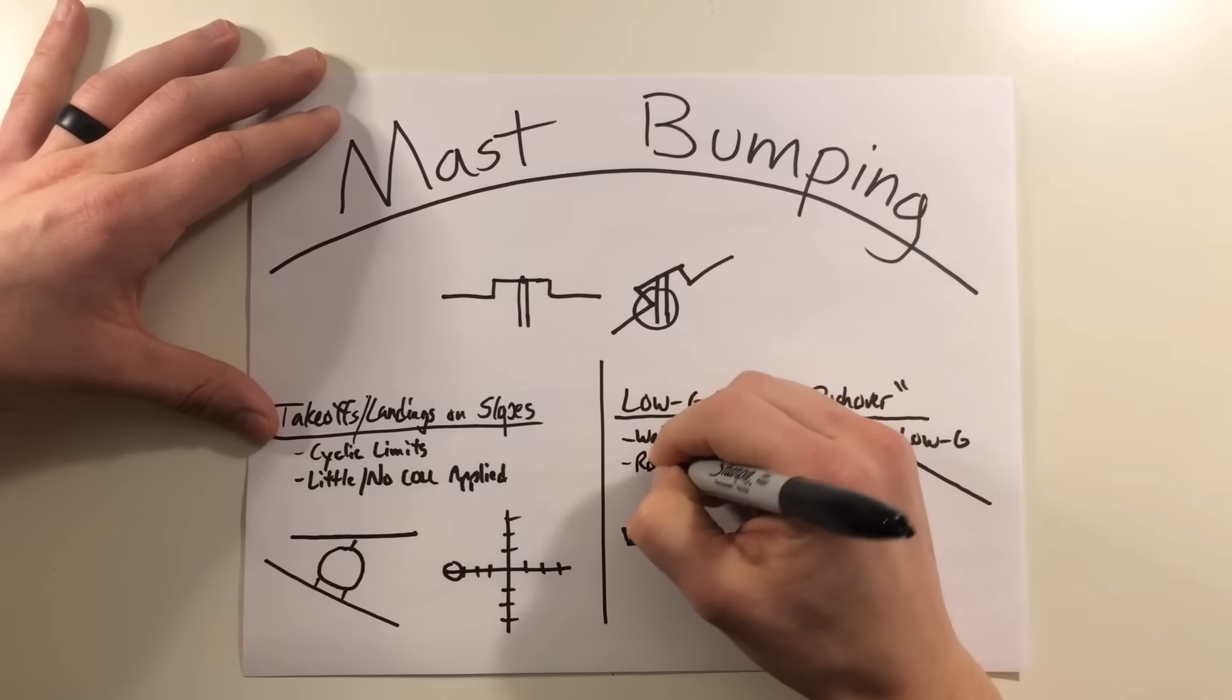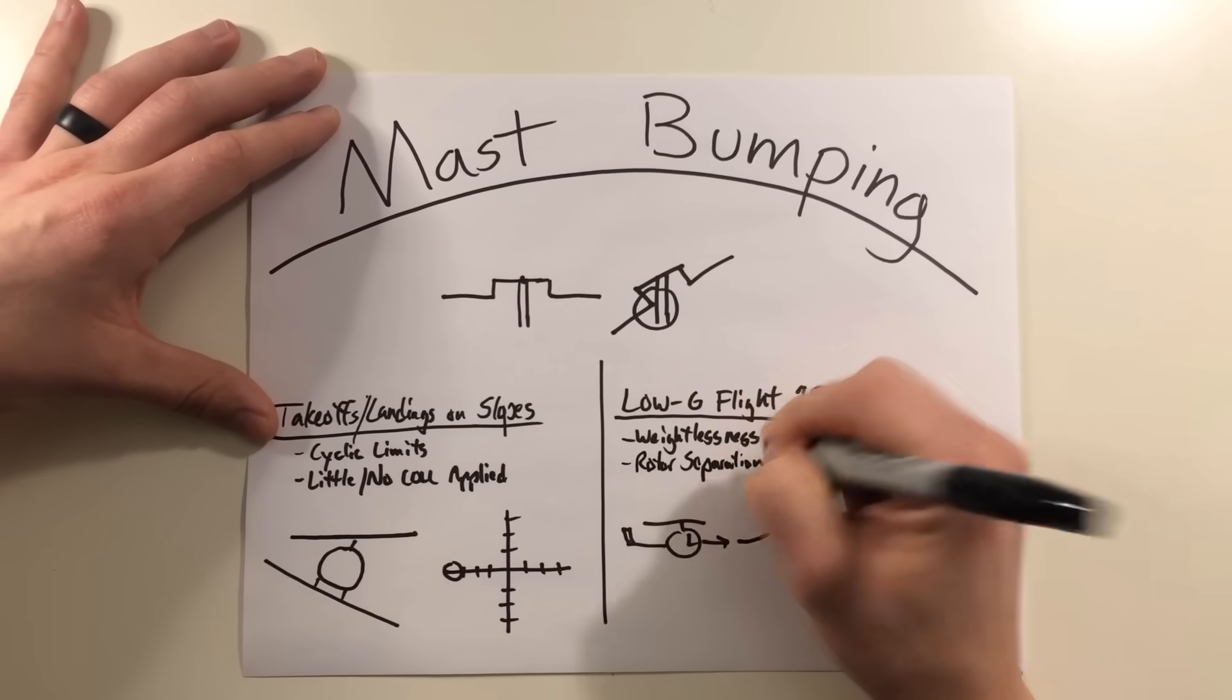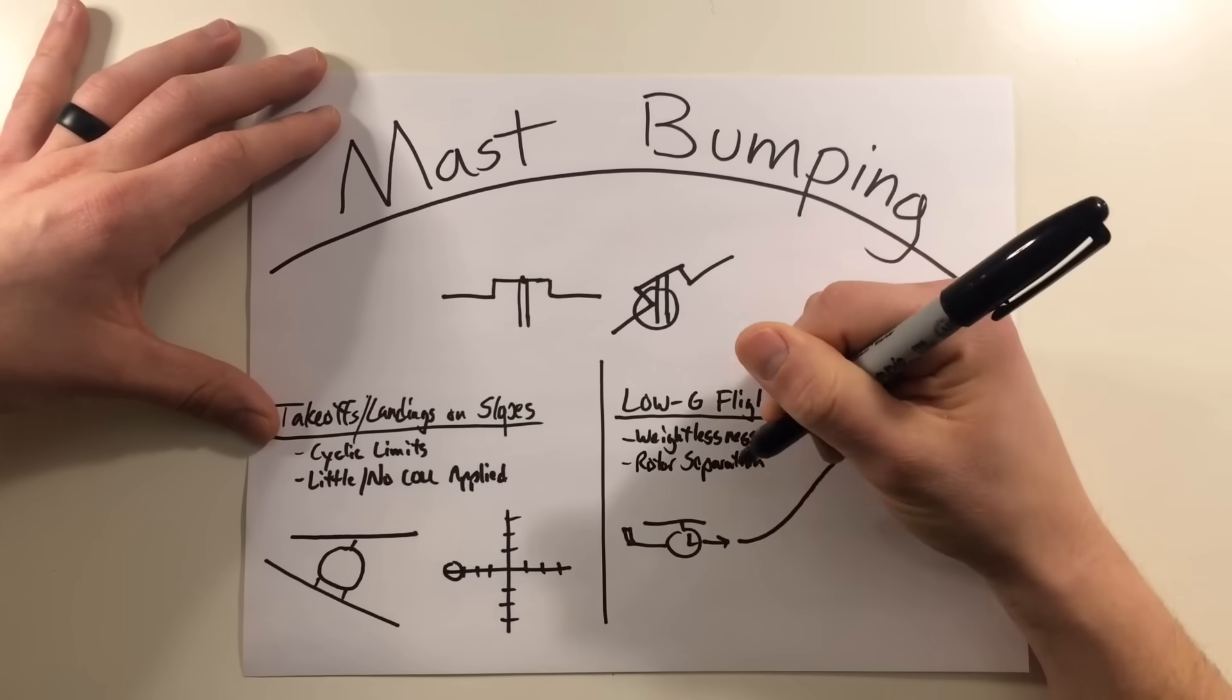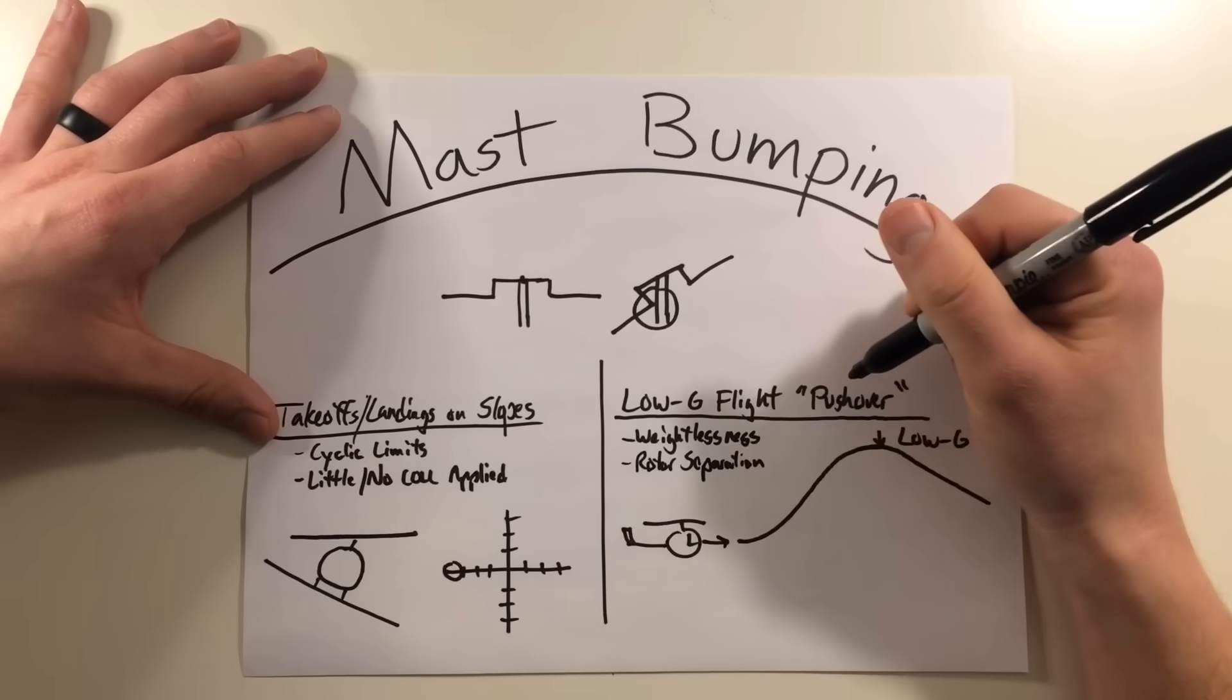So in extreme cases, you're having this rotor separation. Now the way to prevent mast bumping for semi-rigid rotor systems is just avoid these pushover conditions altogether.